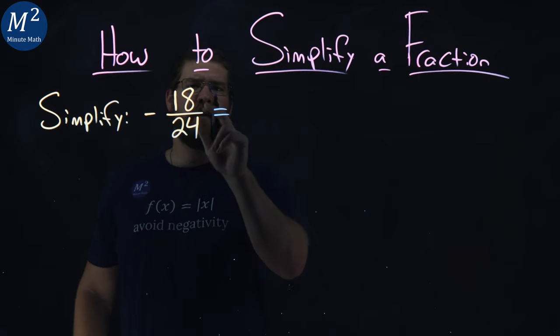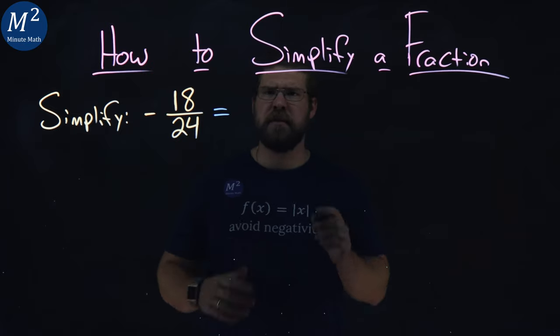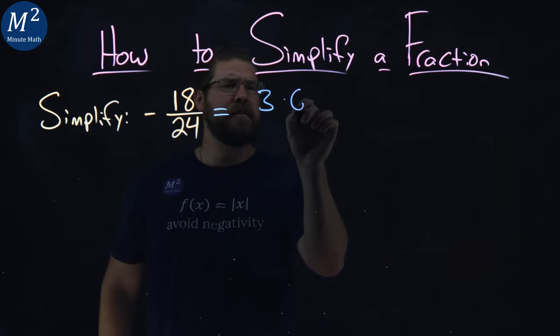What are the factors of 18? Well, 18 is 3 times 6. Let's put that out there. 3 times 6 in the numerator.